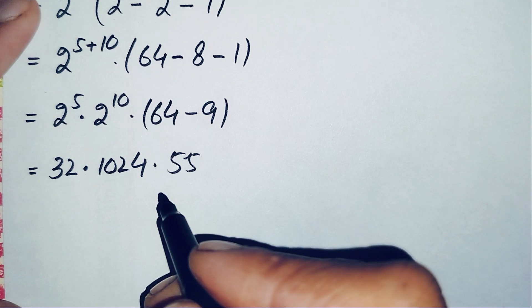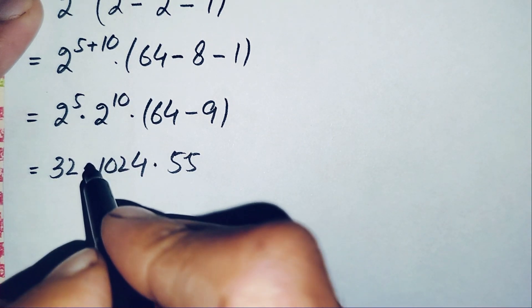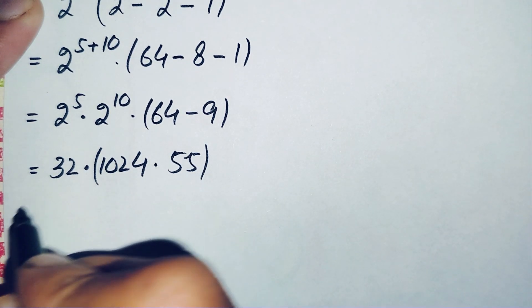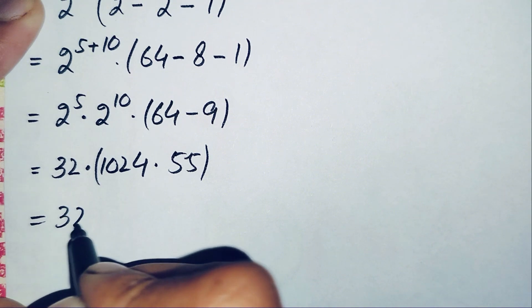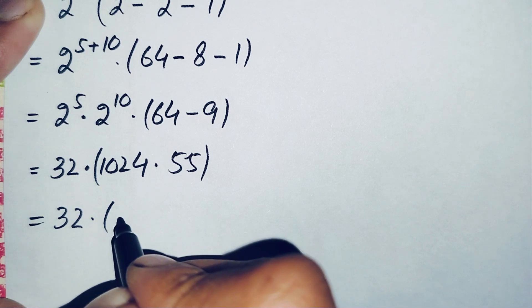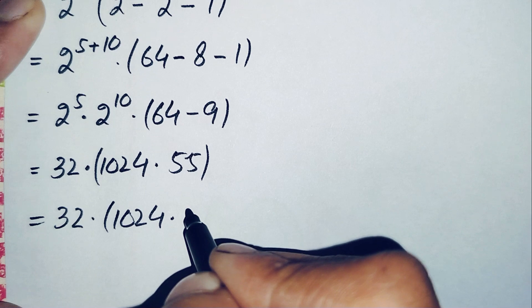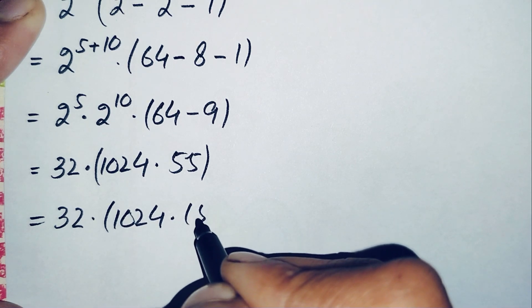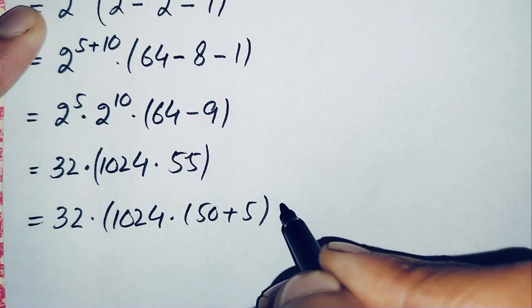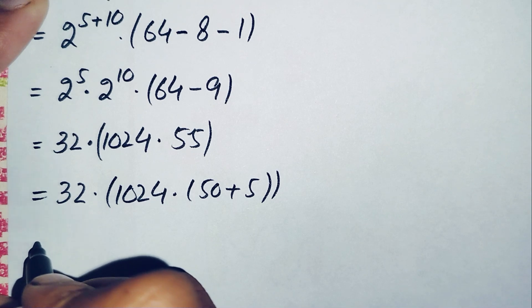So we now have 32 times 1024 times 55. We will try to multiply these three numbers without using a calculator. First multiply 1024 with 55. We can write 55 as the sum of 50 plus 5, so we can easily multiply 1024 with these two numbers separately.